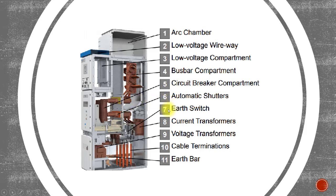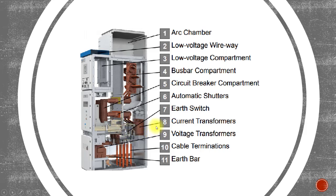Number seven is the earth switch. Normally a three-position earth switch is provided, meaning you can close the isolator, open the isolator, and connect the earth — all with the same device in three positions. In this way, you avoid the need for external grounding of the feeder, and if earth is already closed, the isolator cannot be closed, providing interlock protection.